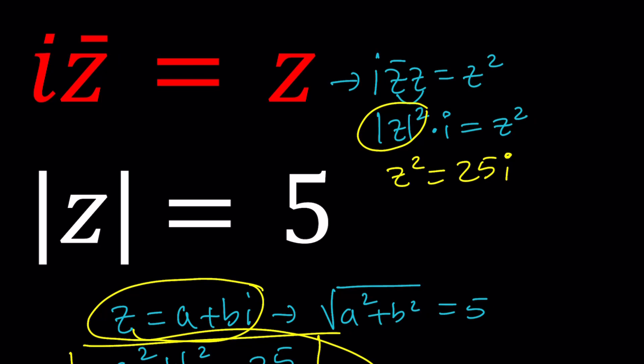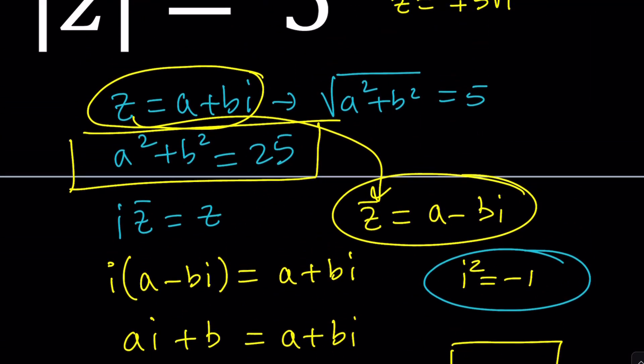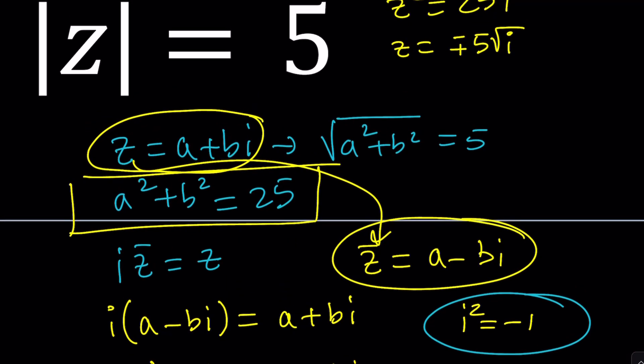So z becomes 5 square root of i, or with the plus minus sign. But square root of i has two values if you really think about it. And what are the square roots of i? The square roots of i actually can be found by writing i in polar form. And i can be written as e to the power i pi over 2. So if you square root it, you're going to get e to the power i pi over 4. And the cosine of pi over 4 is going to be root 2 over 2. And you're going to get the exact same answer from here.